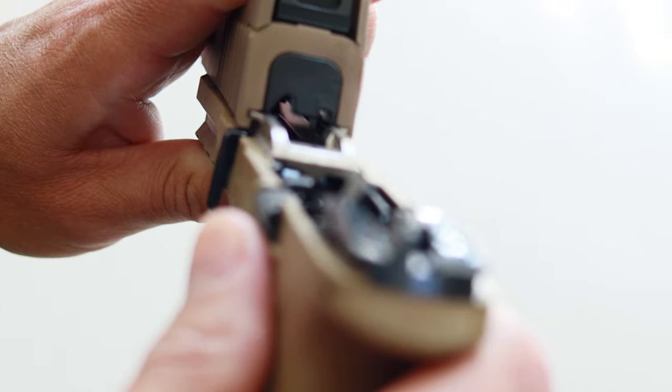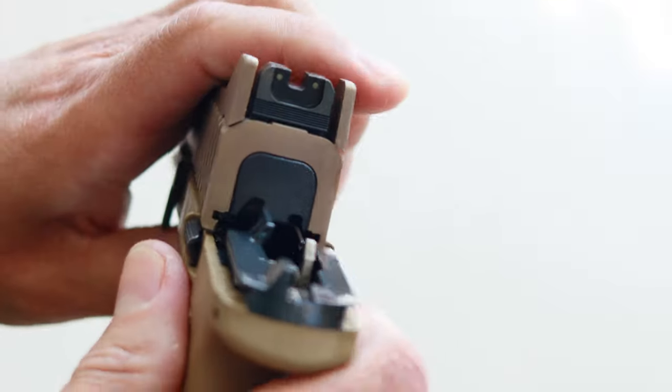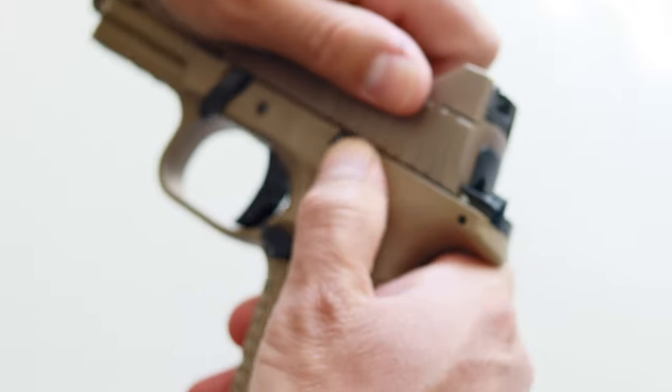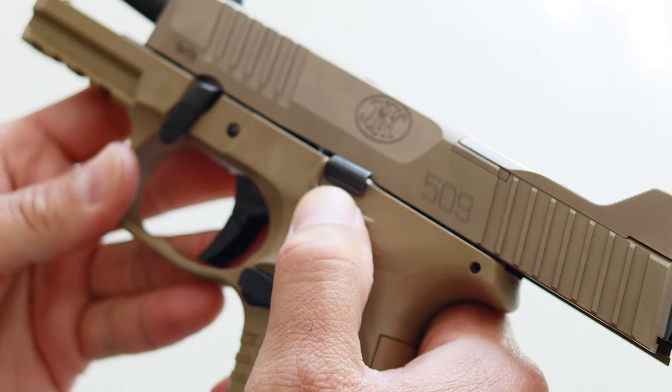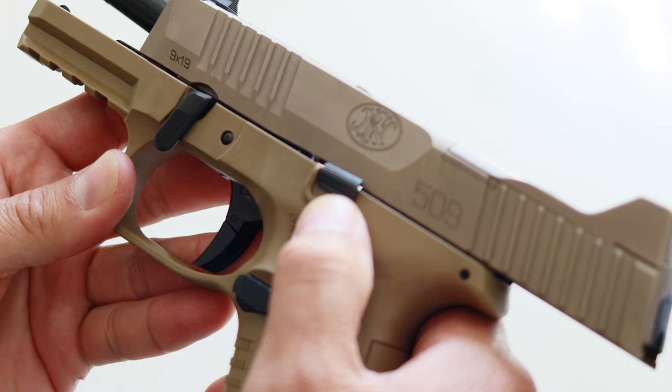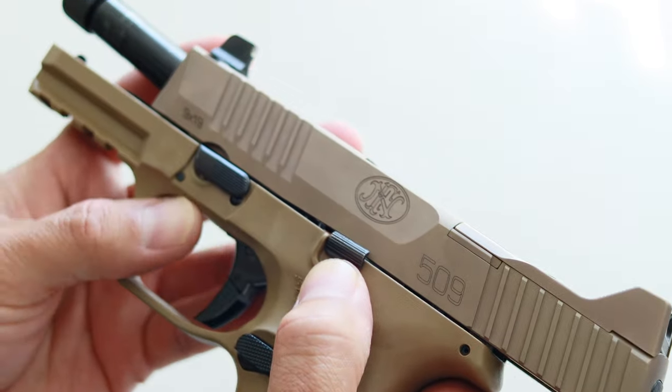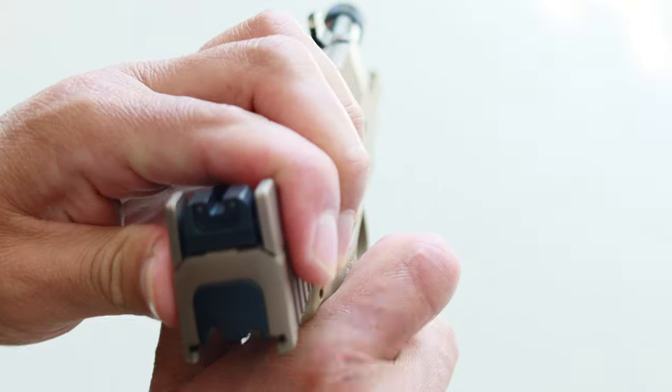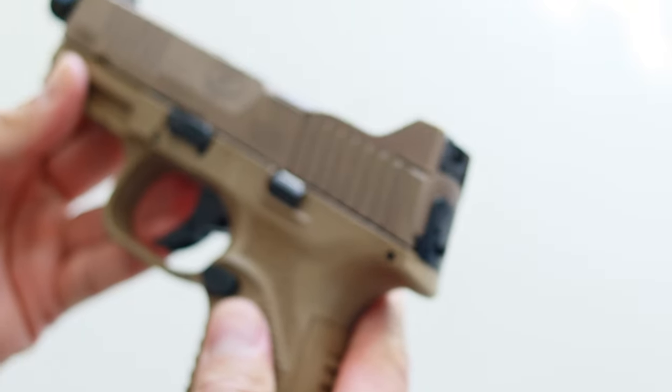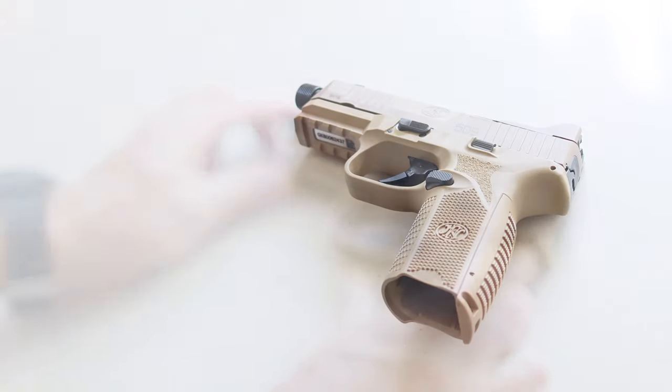Now line up the rails on the frame with the channels on the slide. Pull the slide all the way back and push the slide stop upward to hold the slide back in position. Once again, that's the slide stop right there by my thumb. Now push the slide stop lever back and it's going to snap back into position. Pull the slide stop lever downward with your thumb and let the slide go home. And now your 509 is reassembled.